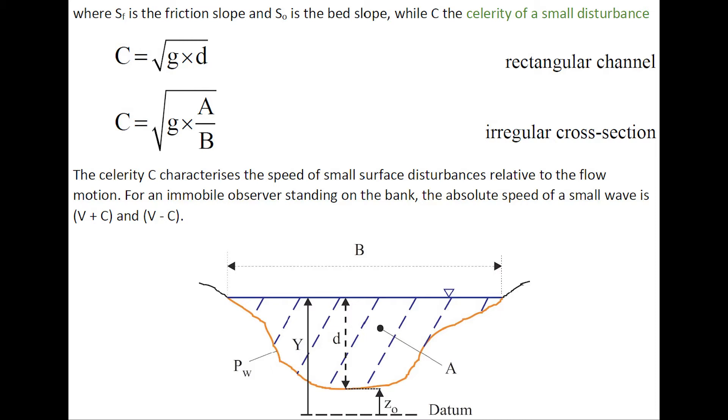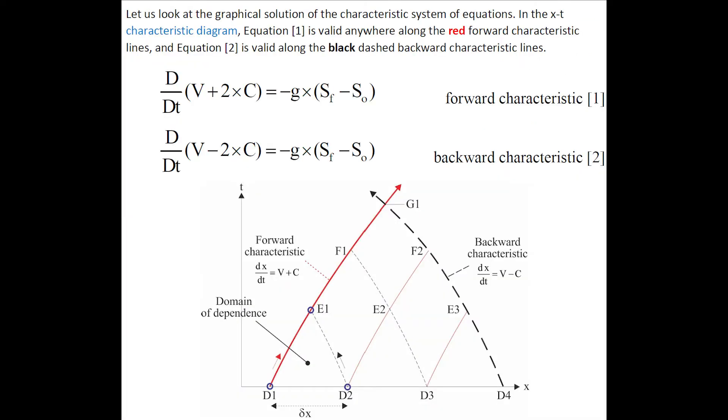The celerity C characterizes the speed of small surface disturbances relative to the flow motion. For an immobile observer standing on the bank, the absolute speed of the small wave would be V plus C or V minus C.